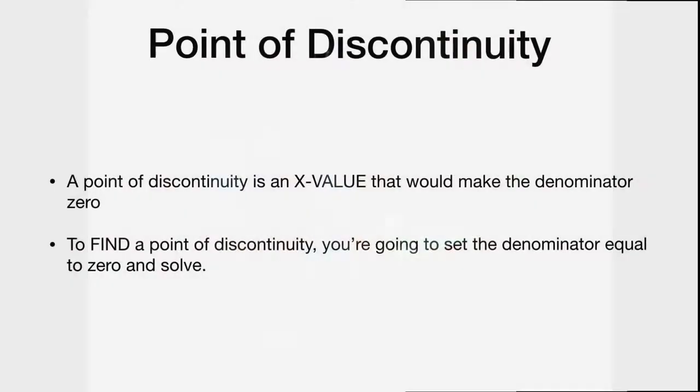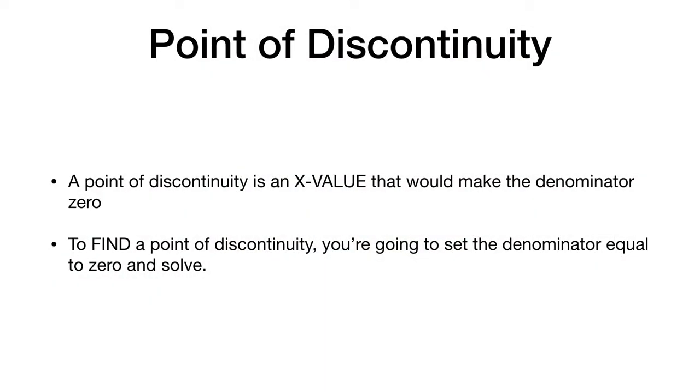So a point of discontinuity is basically anywhere that would make the denominator a zero. It's an x value that would make the denominator a zero. And so to find that point, what we do is we take our denominator and we set it as equal to zero and solve.